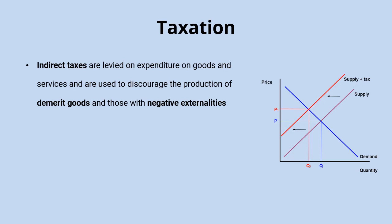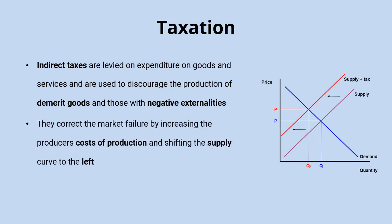These are goods which are worse for us than we realise in the case of demerit goods, or goods which impose costs on third parties, meaning they're going to be overproduced by the market. The idea of the tax is to increase the costs of production for the producer, and the effect of that on the diagram is to shift the supply curve further to the left.